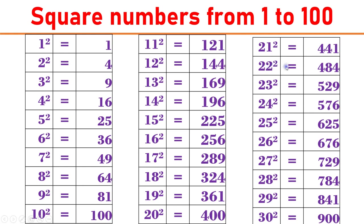22 square equals 484. 23 square equals 529. 24 square equals 576. 25 square equals 625. 26 square equals 676. 27 square equals 729. 28 square equals 784. 29 square equals 841. 30 square equals 900.